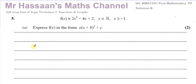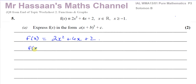In part A we're asked to express f(x) in the form A(x + b)² + c, so basically we have to complete the square. We have f(x) equals x² + 4x + 2. The way I like to complete the square is to first make the x² term have a coefficient of 1. I need the x² to have a coefficient of 1 in order to complete the square.